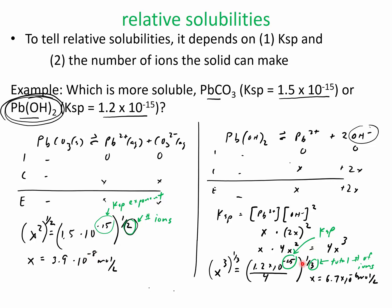So 15 divided by 3 is about 5. And that's a good approximation if we're just trying to figure out which one is more soluble. So if it makes more ions, you're going to get a bigger number right here when you solve for x at the end.